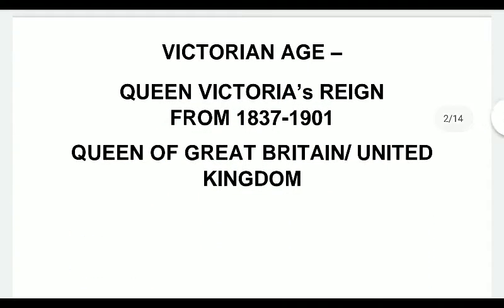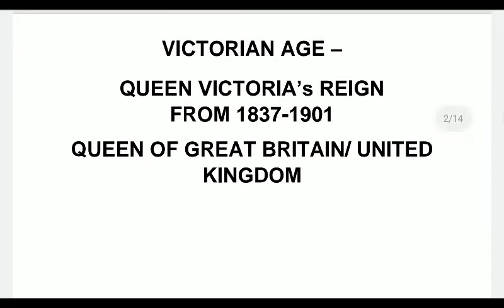Starting with a very basic thing: what is the Victorian age? The Victorian age is basically the reign of Queen Victoria, which stretched from 1837 to 1901. It's a very long reign. Victoria was the Queen of Great Britain, or the United Kingdom, and apart from Great Britain she was also the head of the colonial states, because this was a period where colonization was at its height and Britain was in charge of many colonies, including India. So Queen Victoria was also the Empress of India.